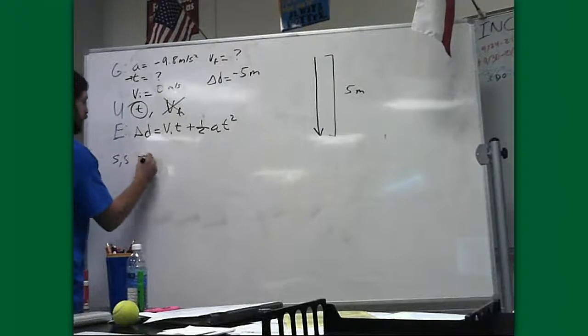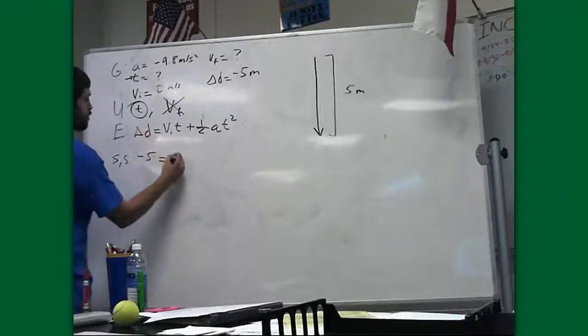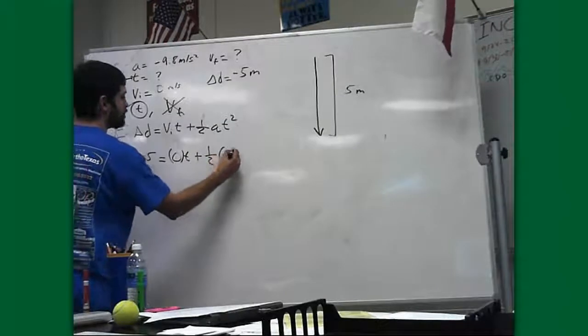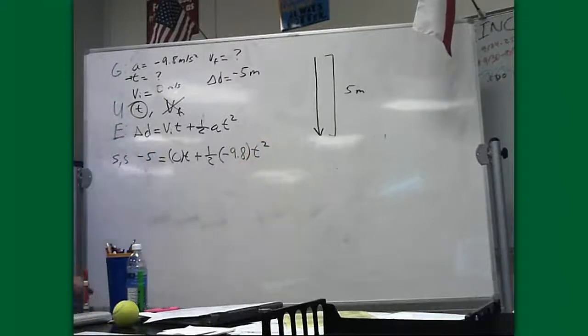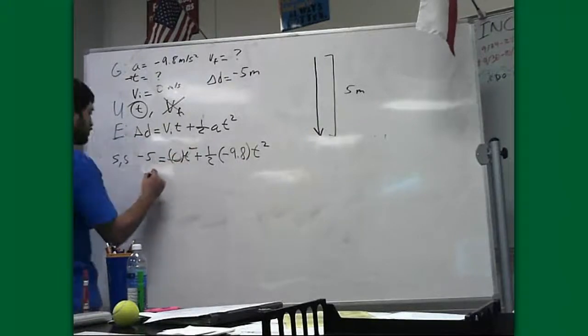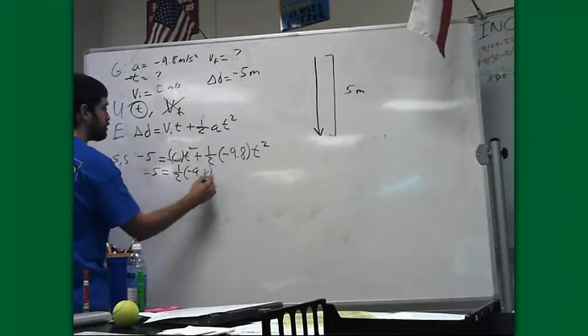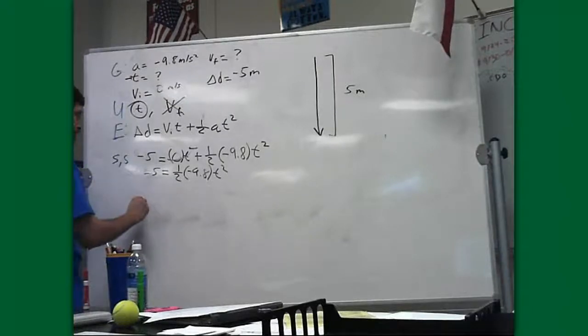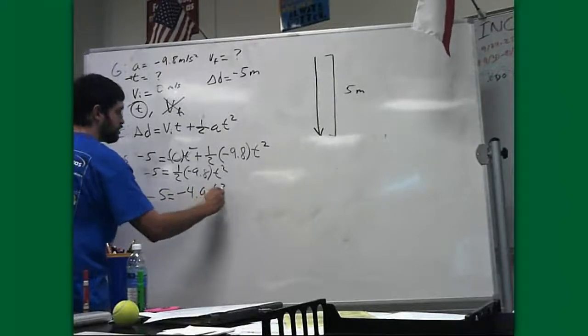Delta D, negative 5. If it's negative here, make sure it goes in negative here. VI is 0. VIT plus 1 half A is negative 9.8. And we have T squared over here. Solve that. 0 times T goes away because that's 0. So, we end up with negative 5 equals 1 half times negative 9.8 T squared. My next step will be to get rid of this. 9.8 times 1 half gives me negative 4.9 T squared.